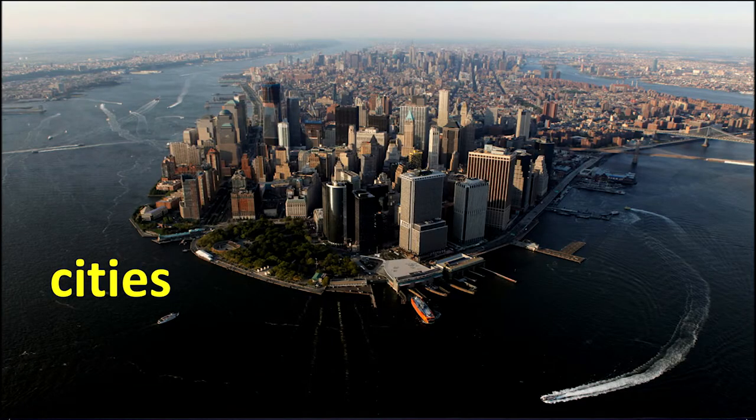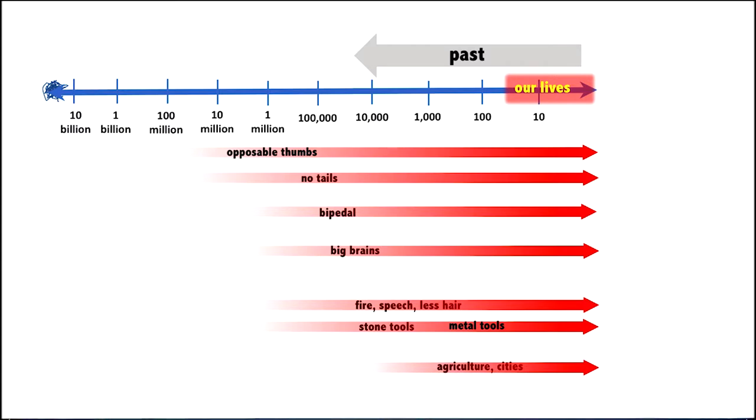And what about agriculture, farming where we get our food from, and cities? When did we start living in cities? We look at the fossil record and agriculture and we see that these things are about ten or twenty million years old.